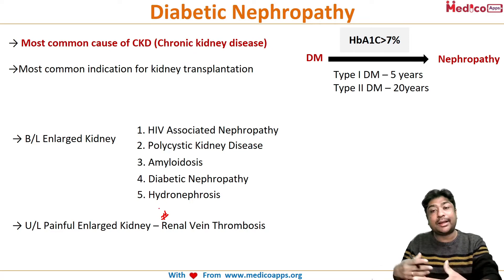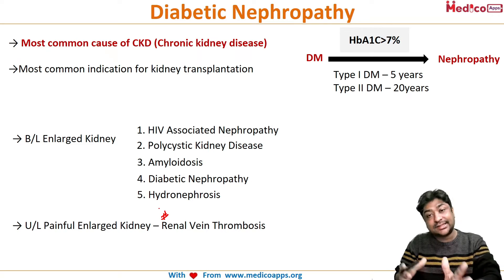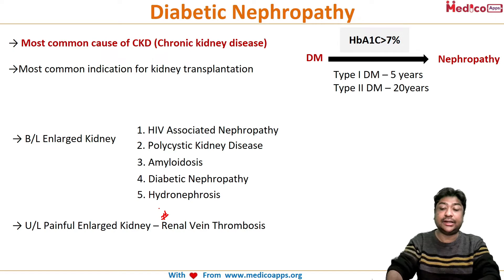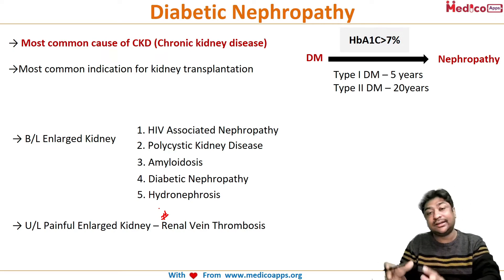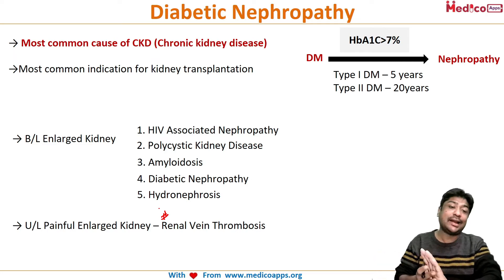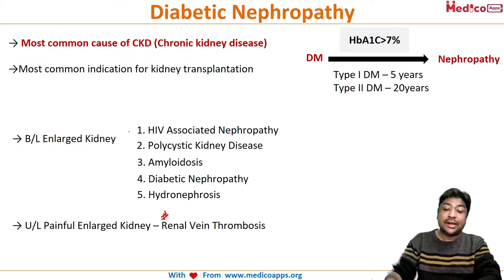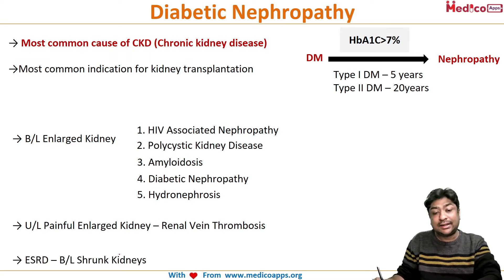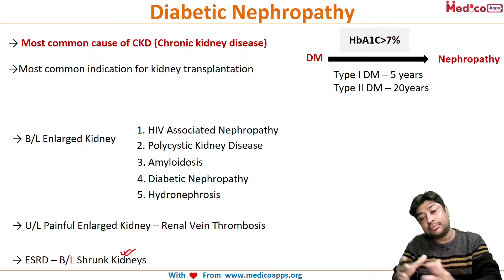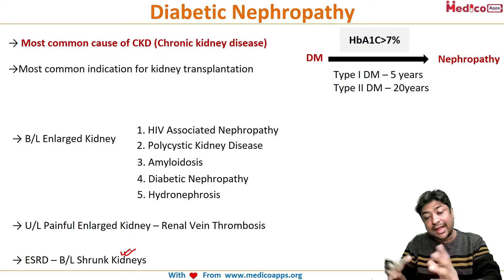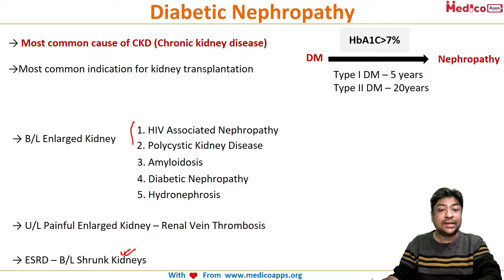When you do an ultrasound for a diabetic patient you will find bilaterally enlarged kidney. However, all end-stage renal disease patients will finally have a bilaterally shrunken kidney. So early in the disease the ultrasound shows bilaterally enlarged painless kidneys, but at end stage, all chronic kidney disease patients will have bilaterally shrunken kidneys.